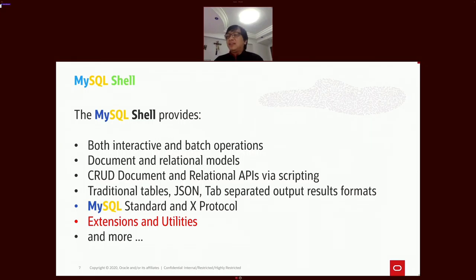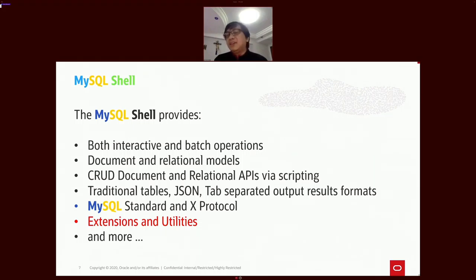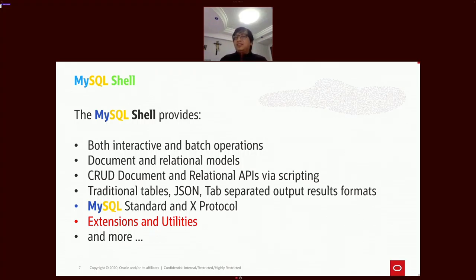The XDev API and X Protocol in MySQL Shell enable it to deal with the relational database and document store. You can use CRUD for document store and SQL for relational tables. You can format output in traditional table format, JSON format, or tab-separated output — so if you need CSV, simply run a command to convert the tab-separated output into CSV.